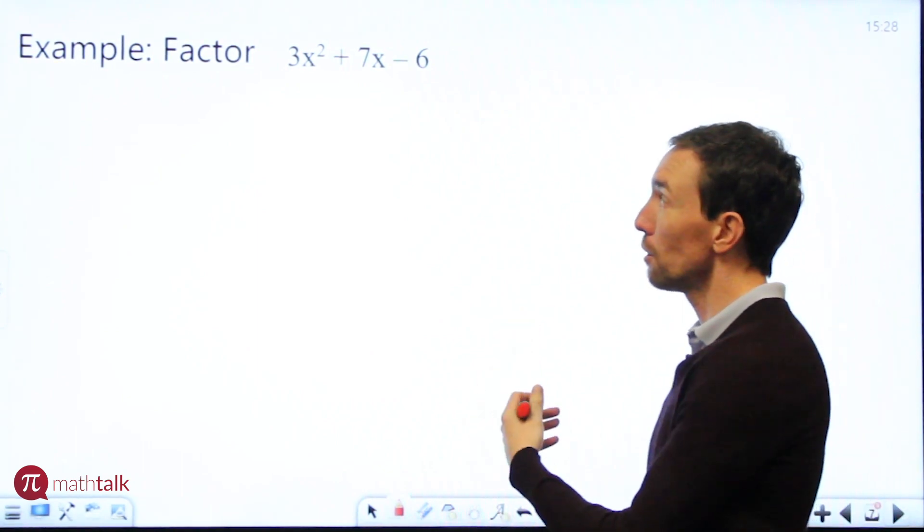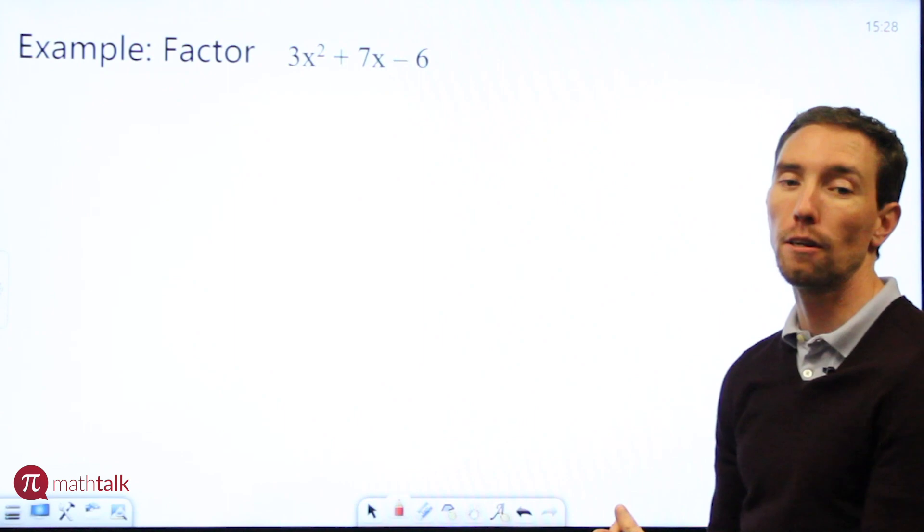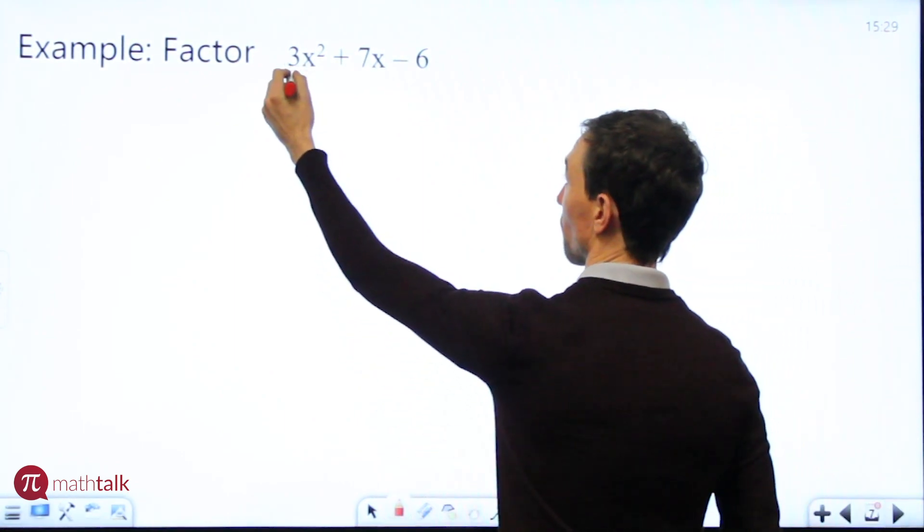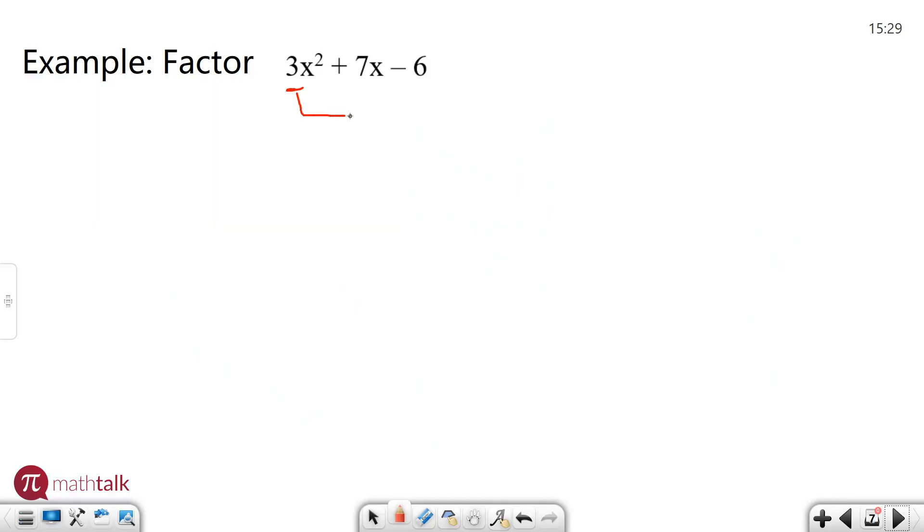You're going to use the same method on factoring these polynomials that you did before. It's called the factor sum method. You're going to take the number in front here, the leading coefficient, and you're going to multiply it by the last number.